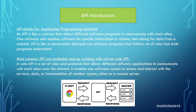So what is API? API stands for Application Programming Interface, and an API is like a contract that allows different software programs to communicate with each other. One software asks another software for specific information or actions, like asking for data from a website. API is like a conversation between two software programs that follow a set of rules both programs understand. The most common API you'll probably end up working with will be a Web API — a set of rules and protocols that allows different software applications to communicate with each other over the internet. It enables one software system to access and interact with the services, data, or functionalities of another system, often on a remote server.